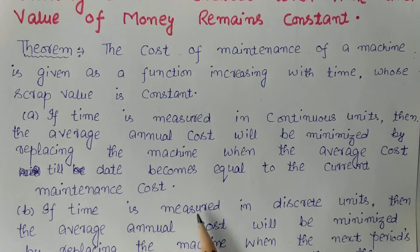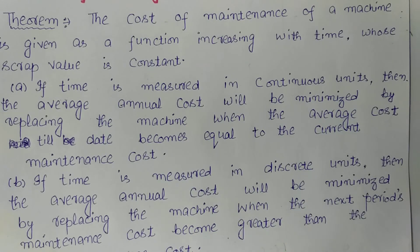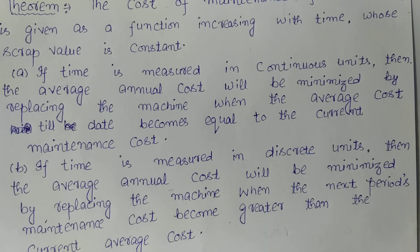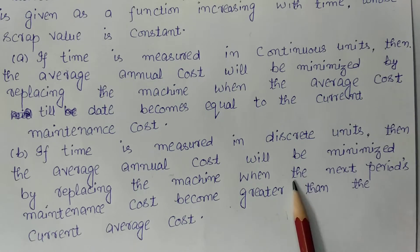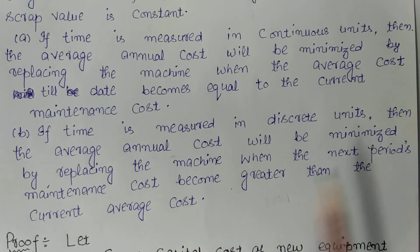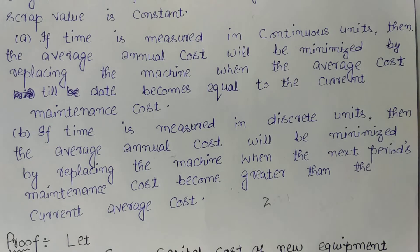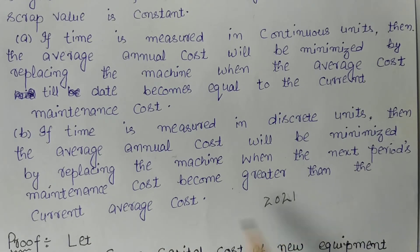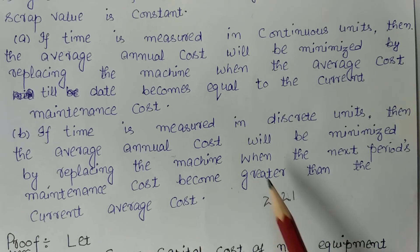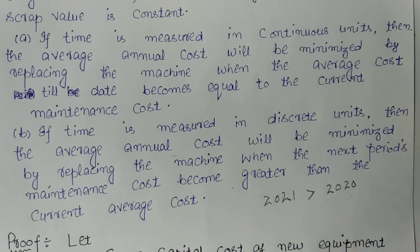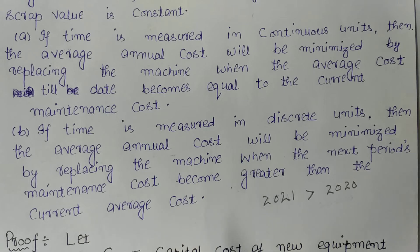The second case is if time is measured in discrete units. Discrete means discontinuous units. Then the average annual cost will be minimized by replacing the machine when the next period's maintenance cost becomes greater than the current average cost. That means when the maintenance cost for year 2021 becomes greater than the average cost of 2020, you will replace the machine and minimize the average annual cost.